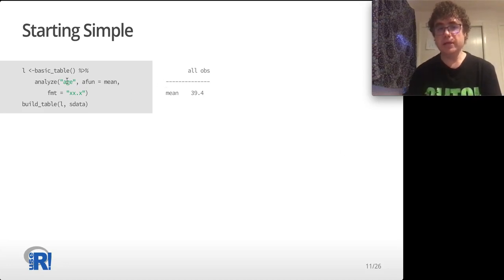We start with a basic table and we say analyze the age variable with the analysis function mean, and then we give it a format that just controls how it gets displayed. Then we say use our layout to build the table, the display table based on this raw data. We can see because we don't have any structure in row or column space, we have a single column that has all of the observations, and then we only have one row which is our analysis row, which is the application of our function, in this case mean, to all of our data on the variable age.